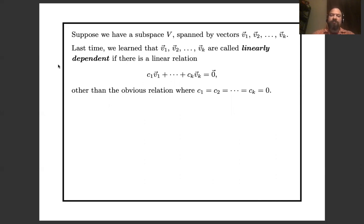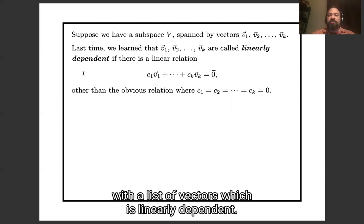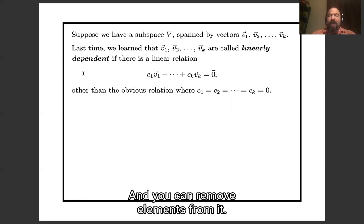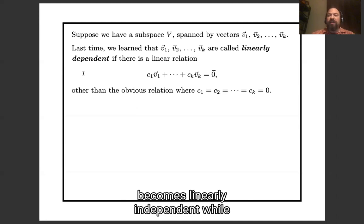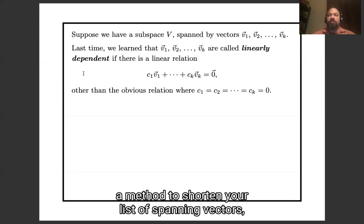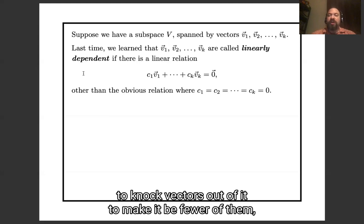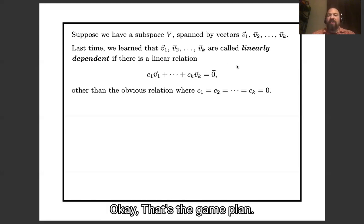What I'm going to tell you now is that you can start with a list of vectors which is linearly dependent and remove elements from it — pare it down and make it shorter — until it becomes linearly independent while still spanning the same space. So I'm going to tell you about a method to shorten your list of spanning vectors, knocking vectors out of it until you get a linearly independent spanning vector list. That's the game plan.